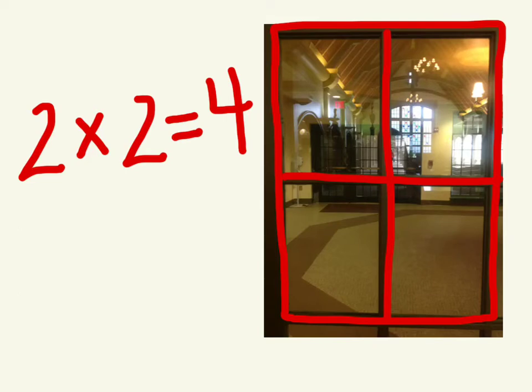This is a window and it represents 4. 2 times 2 equals 4.